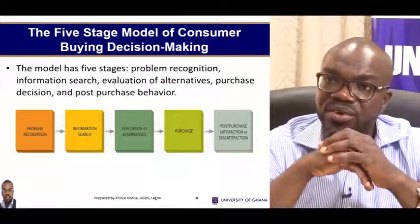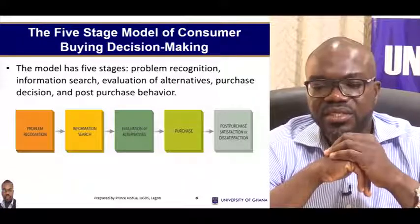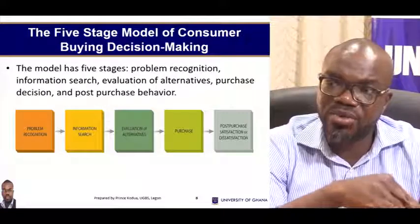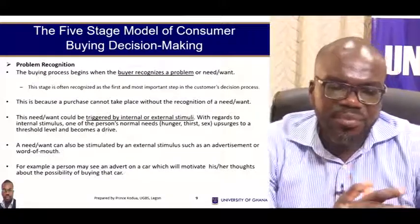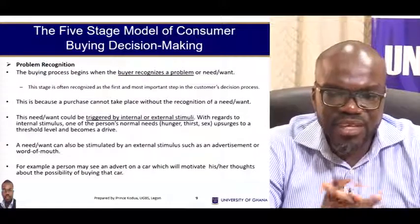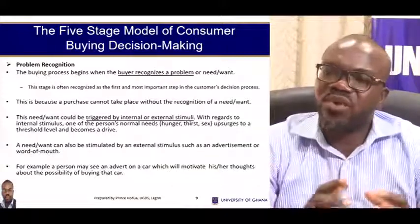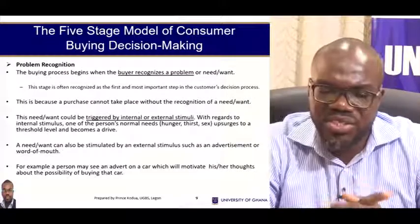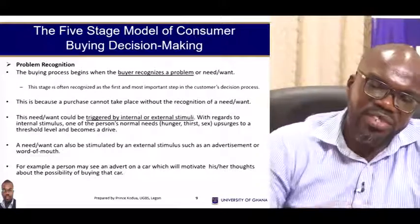The simplified five-stage decision-making model goes from problem recognition, information search, evaluation of alternatives, purchase, and then post-purchase satisfaction or dissatisfaction — that's where post-purchase cognitive dissonance comes in. The problem recognition stage is where the process begins: the buyer recognizes a problem or a need. This is the most important stage of the entire decision-making process, because the process cannot start without need recognition since behavior is goal-driven.